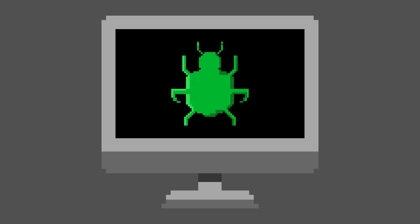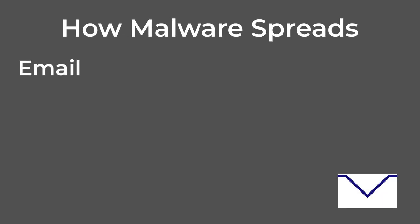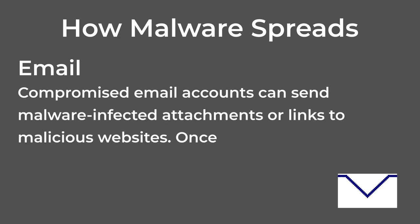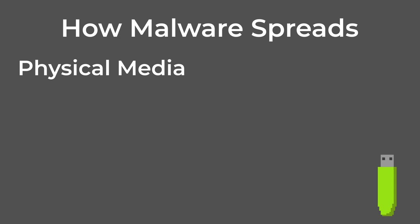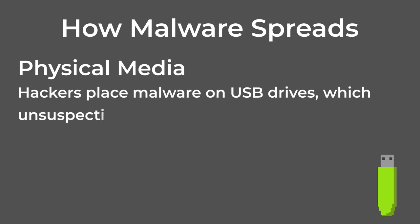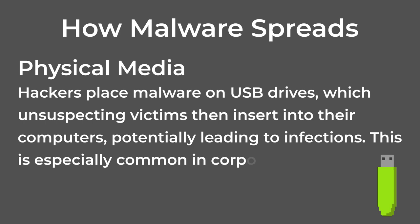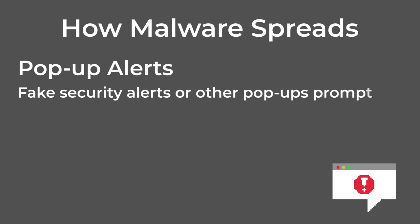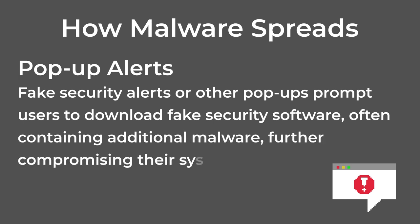How does malware spread? As mentioned throughout the video, malware can spread in many different ways. Some of the most common include: Email — compromised email accounts can send malware-infected attachments or links to malicious websites; once opened, recipient systems become infected, continuing the cycle. Physical media — hackers place malware on USB drives, which unsuspecting victims can insert into their computers, potentially leading to infections; this is especially common in corporate settings. Pop-up alerts — fake security alerts or other pop-ups prompt users to download fake security software, often containing additional malware, further compromising their systems.